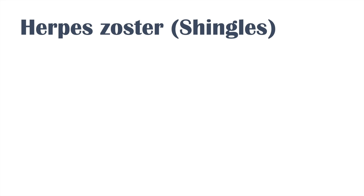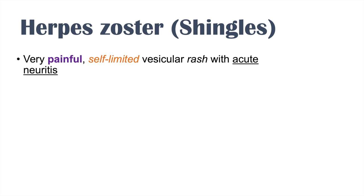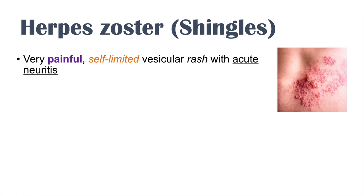Hey everyone, this lesson is on shingles or herpes zoster. In this lesson we're going to talk about what shingles is, why it happens, some of the risk factors, and we're also going to talk about how we can diagnose and treat it. It's a very painful, self-limited vesicular rash with acute neuritis, and I'm going to talk about what all those terms mean more specifically in the next couple of slides.